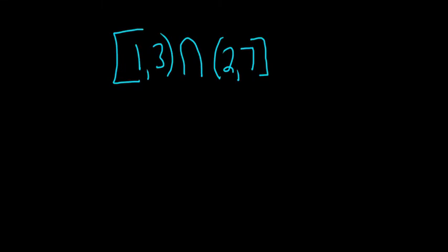Let's find the intersection of the set [1,3) intersected with (2,7]. So to find the intersection, maybe the easiest way to do it is to graph both of these sets.